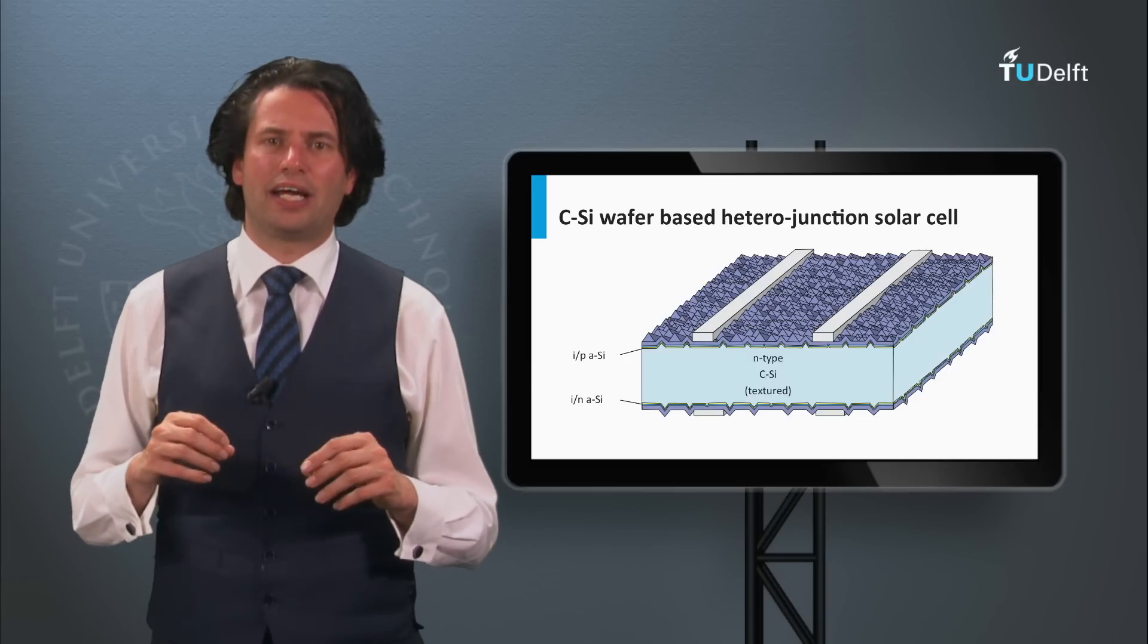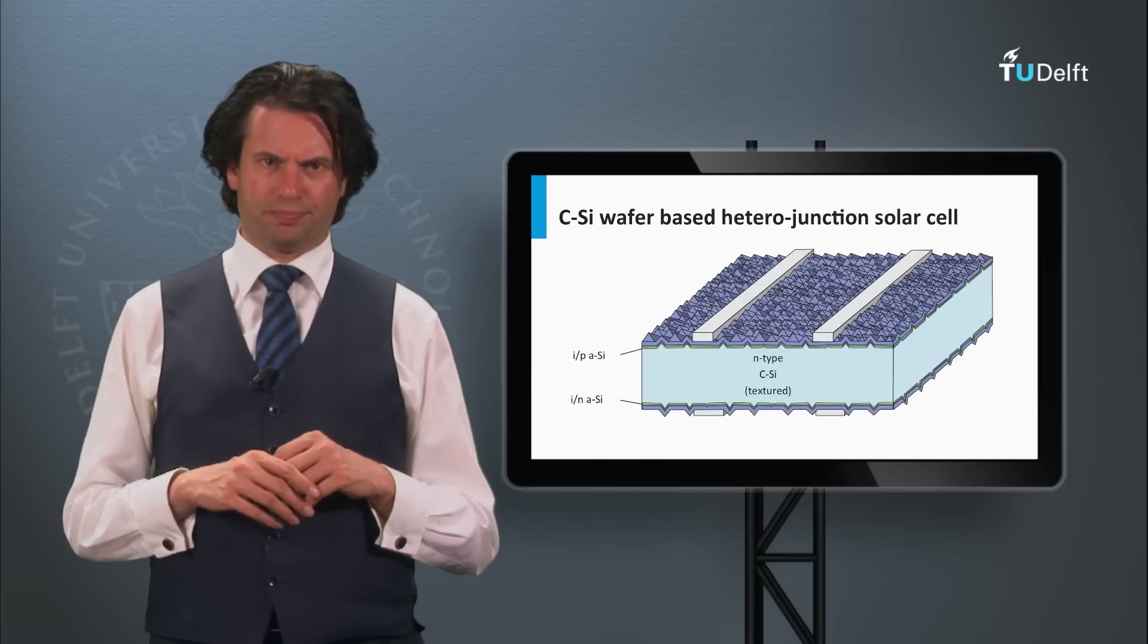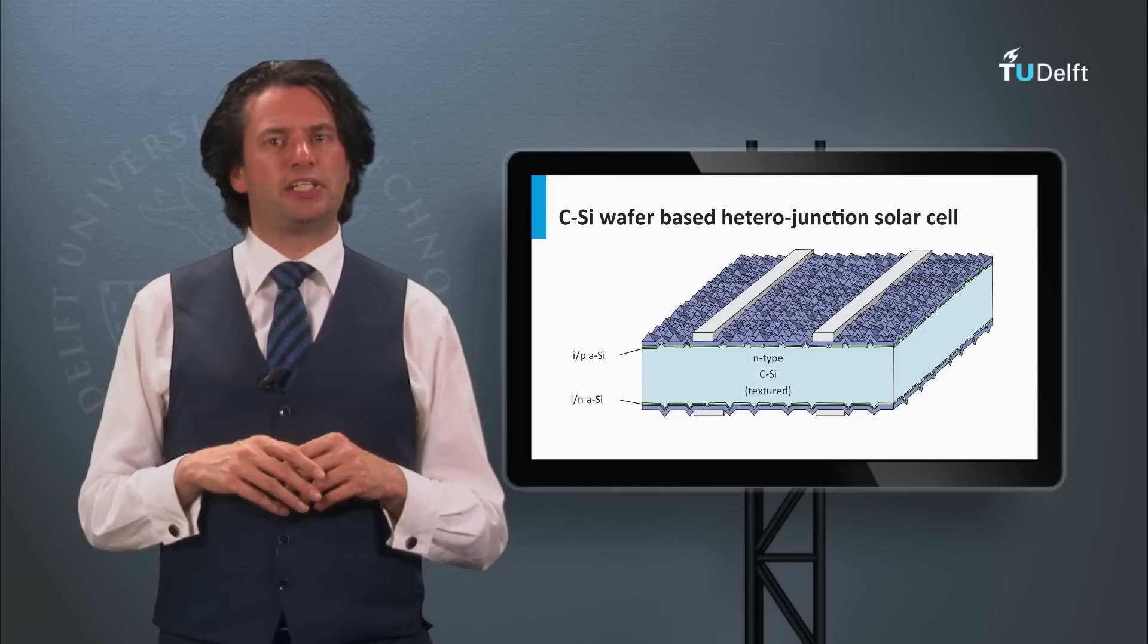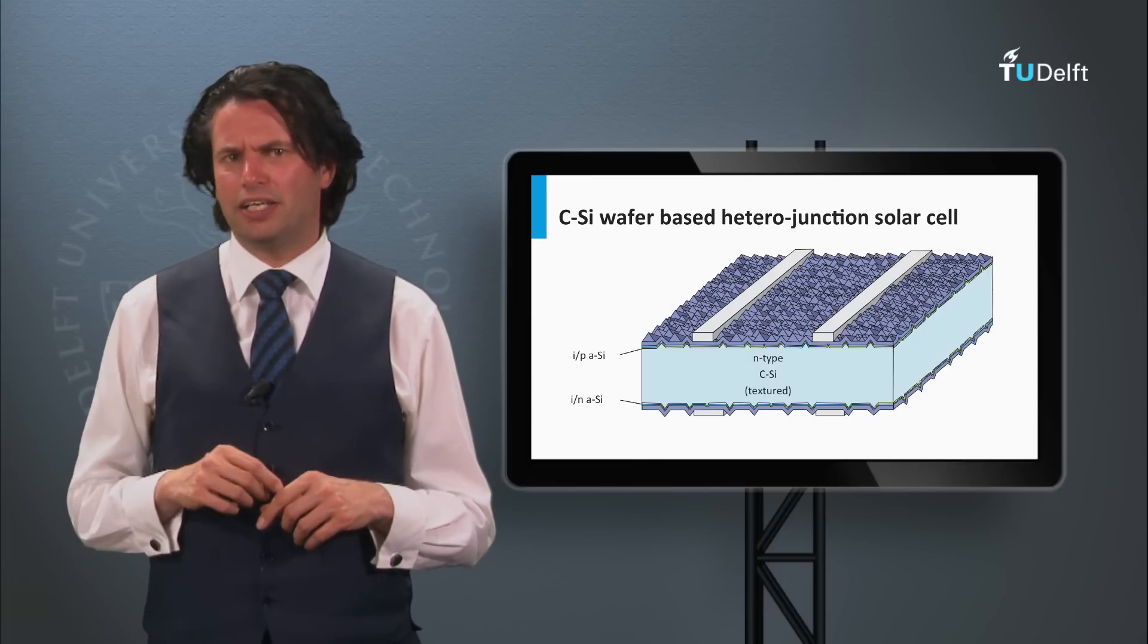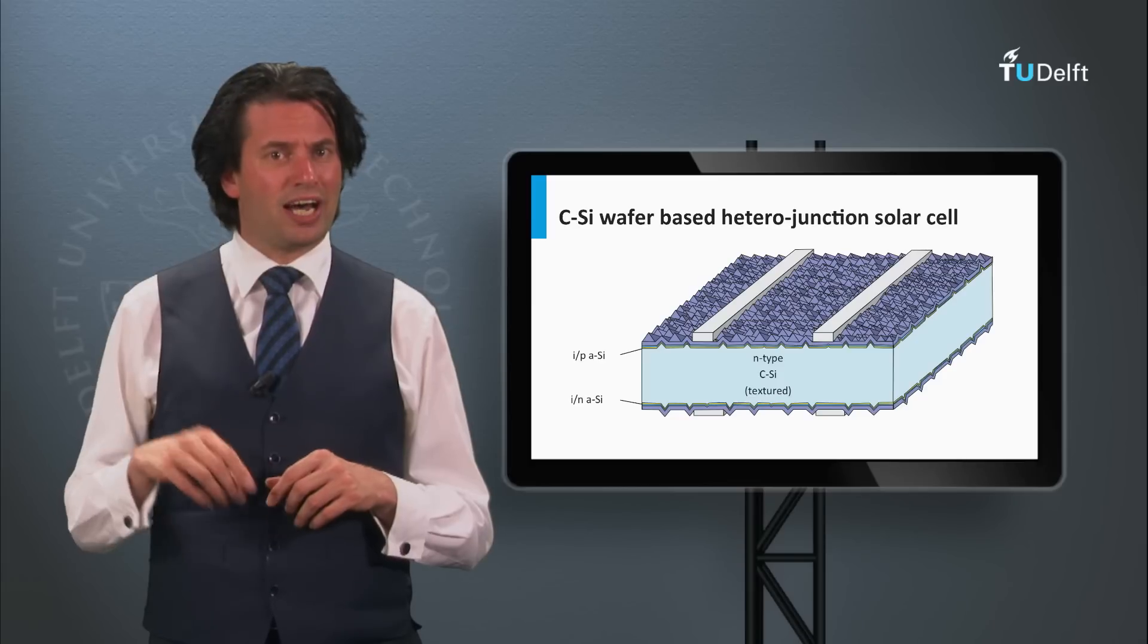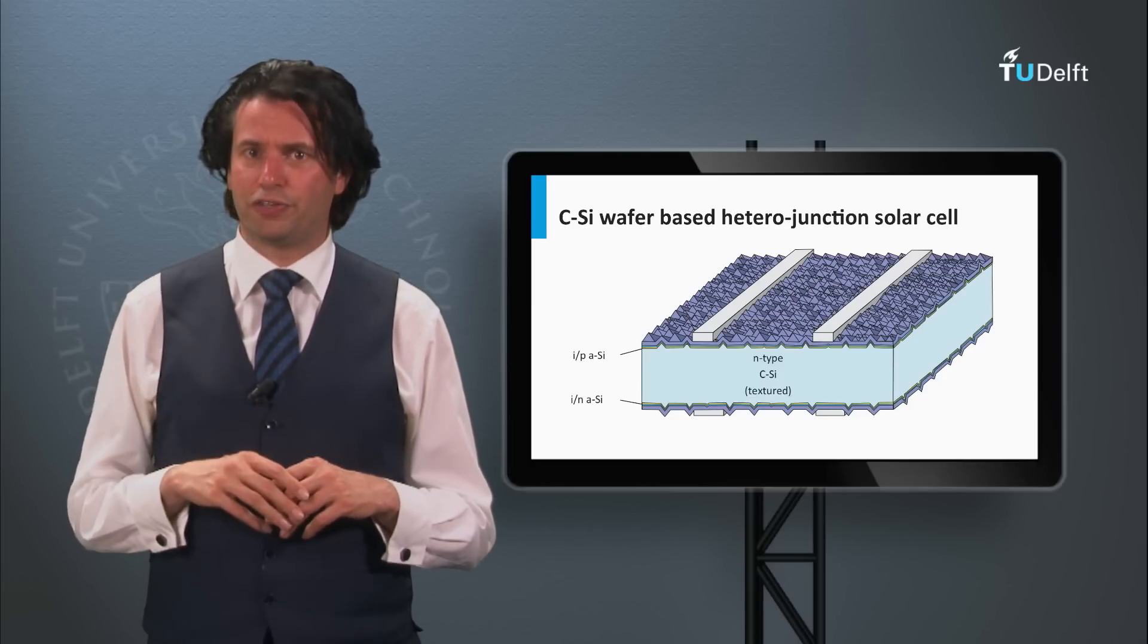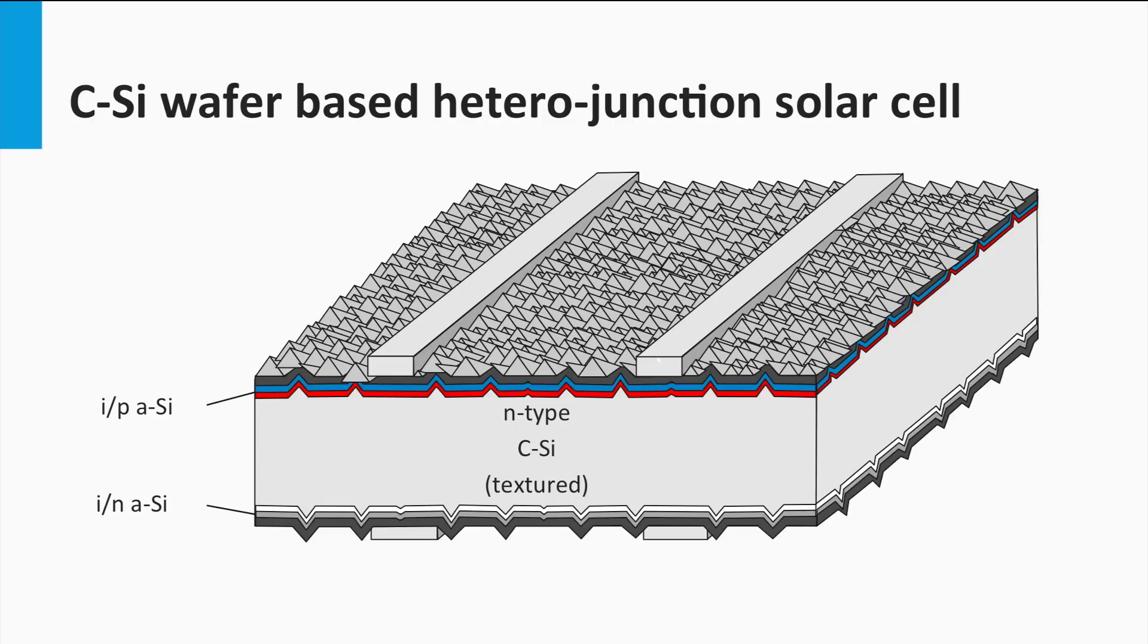Now let's go to the crystalline silicon wafer based heterojunction solar cell. This is a concept which has been invented by the Japanese company Sanyo, which is currently part of Panasonic. The Panasonic cell is called the HIT cell, which stands for heterostructure with intrinsic thin film. The HIT cell configuration has two junctions. The junction at the front side is formed using a thin layer of only 5 nm of intrinsic amorphous silicon, which is indicated by the red color. A thin layer of P-doped amorphous silicon is deposited on top and is indicated with the blue color. The heterojunction forces the holes to drift to the P-layer.